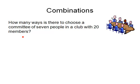We don't have a committee chair, a vice committee chair, or a recording secretary. All the people in there are essentially identical. We need to use combinations to calculate this, so we need to do C(20,7).